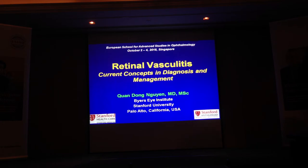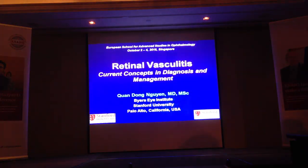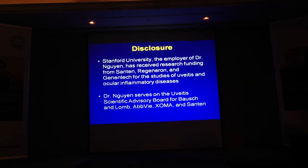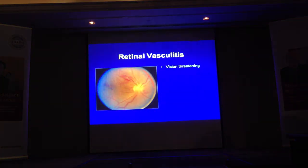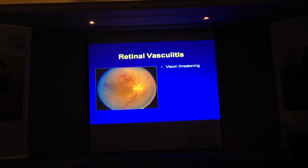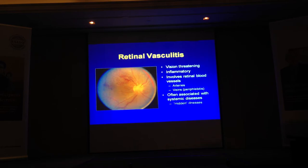This is a condition that can lead to significant visual loss, and it's quite interesting because it has systemic associations. It can be vision threatening — especially when the macula is involved, that can definitely drop your vision. We think of it as inflammatory in cause, involving blood vessels — both the artery and the vein. Which one tends to be most affected? The vein. So phlebitis, or periphlebitis, is the most common.